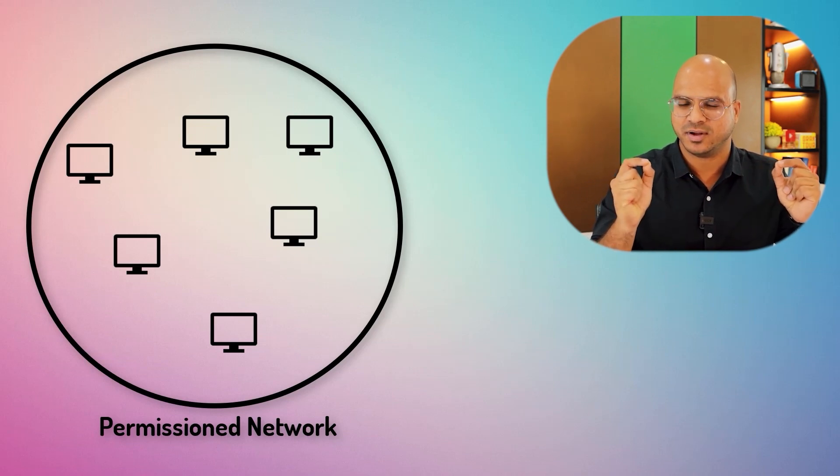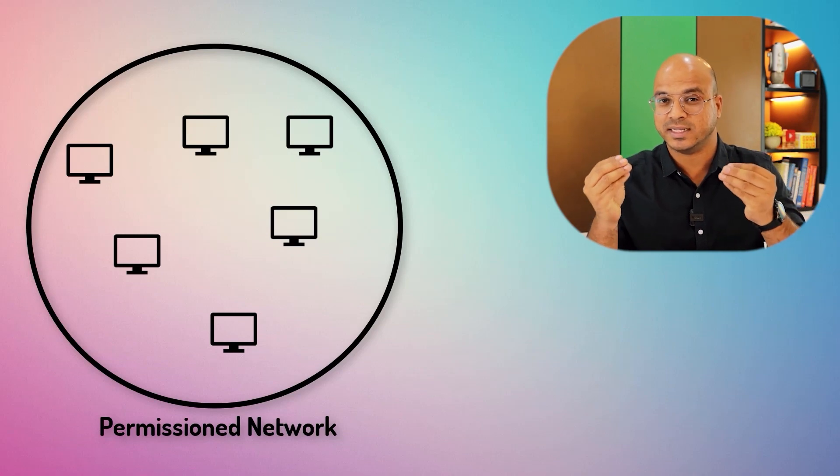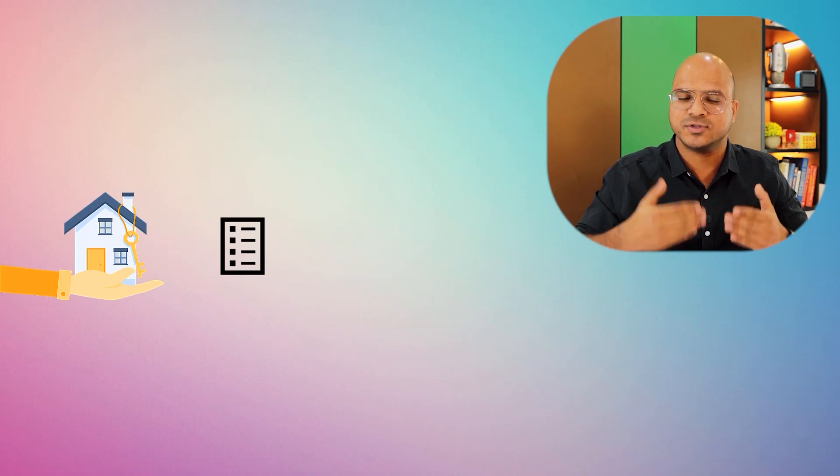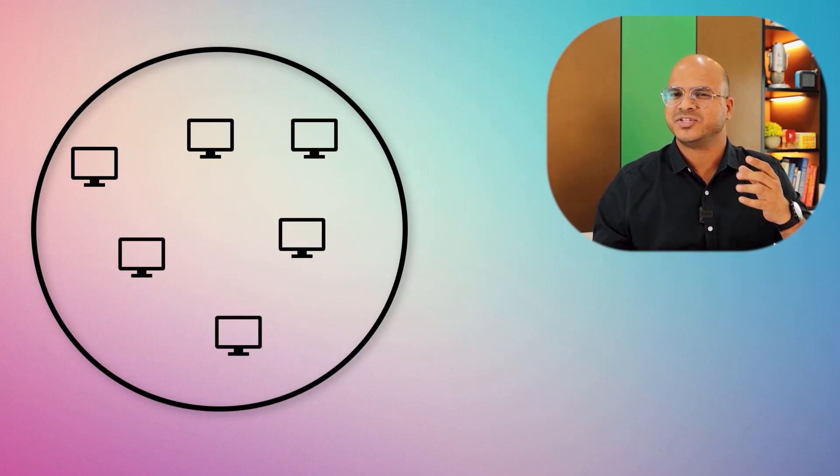From all these nodes we have some special nodes. When you have a distributed ledger — a network of distributed nodes storing data on all these machines — we need someone to manage it and check whether a particular asset has already been transferred. For example, if I give an asset to someone, is there a guarantee I haven't given it to someone else before? That's the double-spend problem. We need to make sure no asset is transferred multiple times. For that we need a notary — just like in the real world when you transfer a house you need a notary. These special nodes in Corda are called notaries.